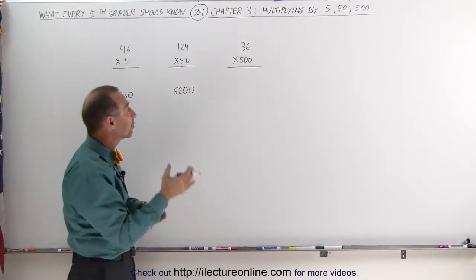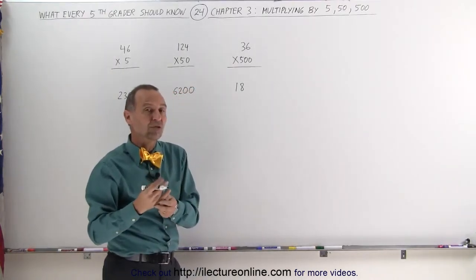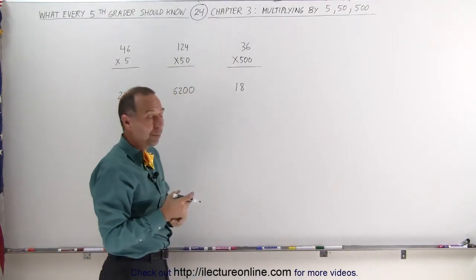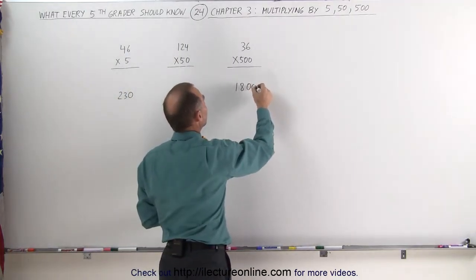Or the number 36 times 500. Take 36 and divide by 2. Half of 36, that is 18. And now you multiply times a thousand, which is twice 500. Now multiplying times a thousand is the same as adding three zeros. The answer is 18,000.